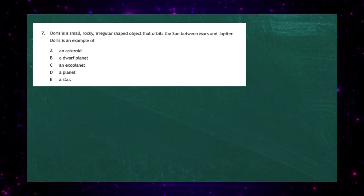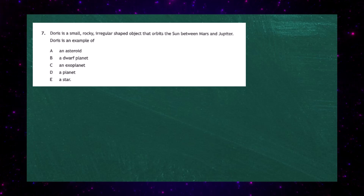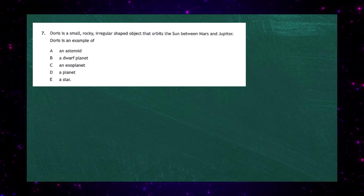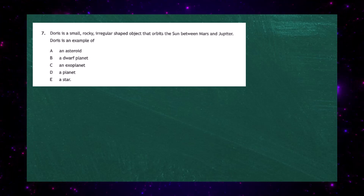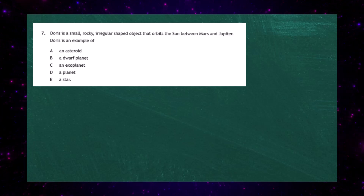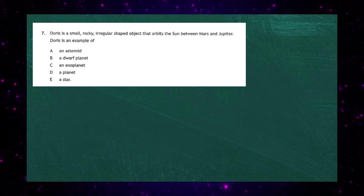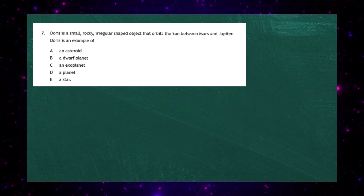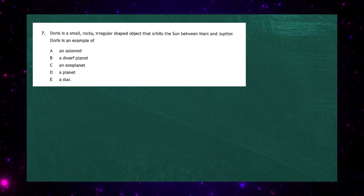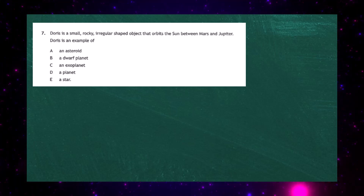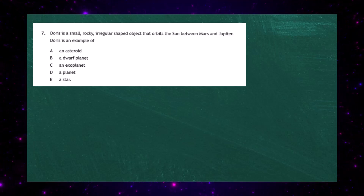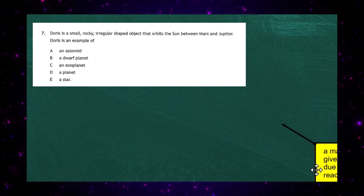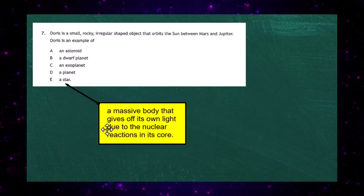Question 7 from the 2023 National 5 Physics exam. Doris is a small, rocky, irregular-shaped object that orbits the sun between Mars and Jupiter. Doris is an example of — and you've got five responses. Let's eliminate them, beginning with the last response E: a star.